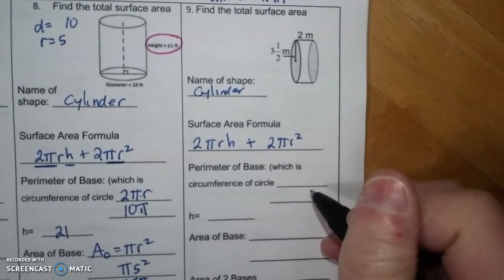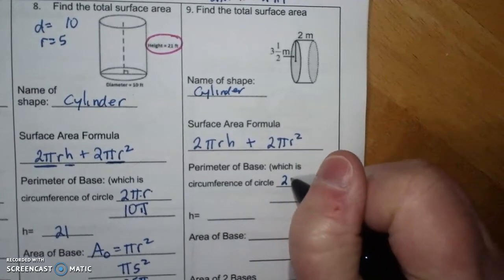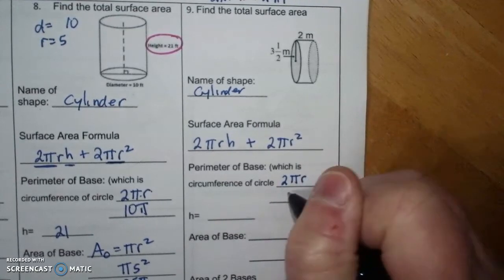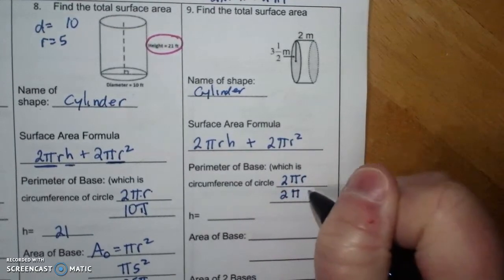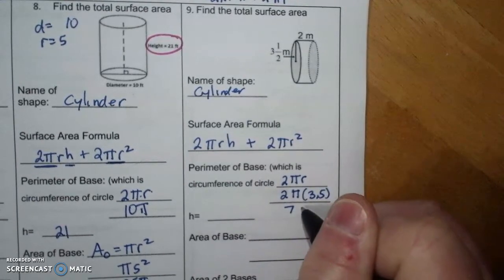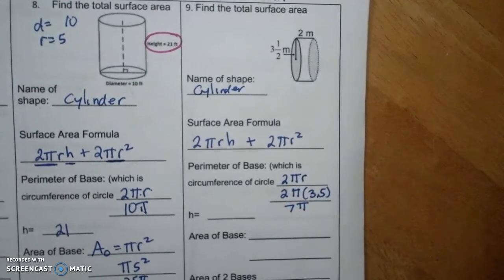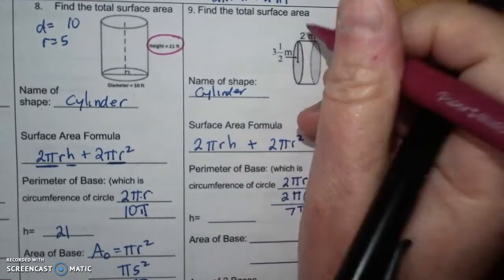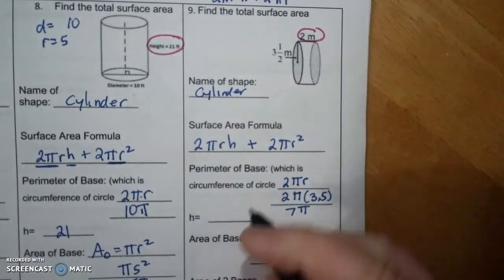So circumference is 2πr which is 2π times 3.5 which is 7π. The height is the distance between the two circles which is 2.